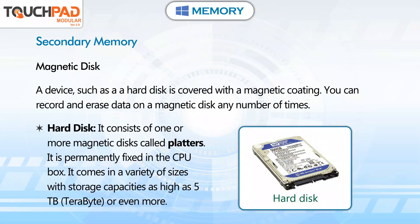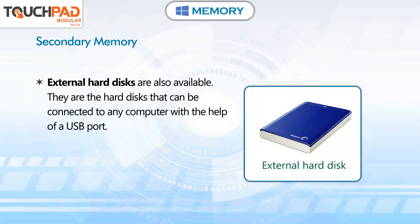Hard disk. It consists of one or more magnetic disks called platters. It is permanently fixed in the CPU box. It comes in a variety of sizes with storage capacities as high as 5 TB (terabyte) or even more. External hard disks are also available — they can be connected to any computer with the help of a USB port.